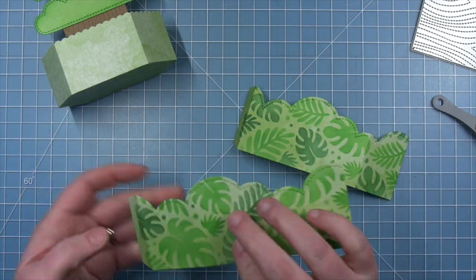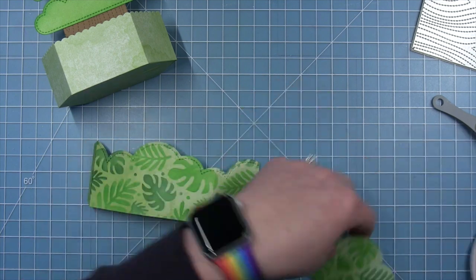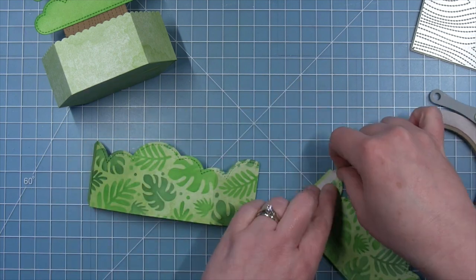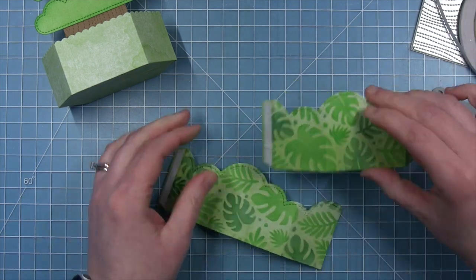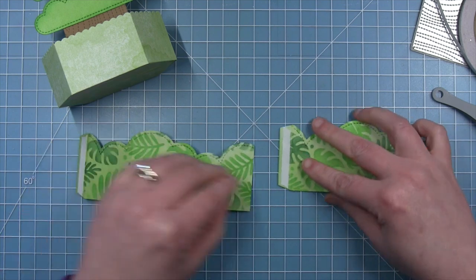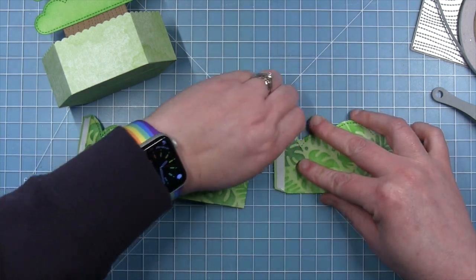And make sure that that temporary adhesive that's on the back is rubbed off so that it doesn't get hung up on the box when I try to slide this over. I'll add some double sided adhesive to each of those little tabs. And then I can use my grid mat to line these up and make my wraparound.